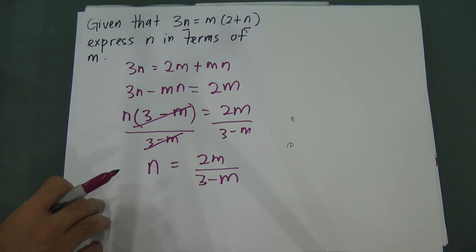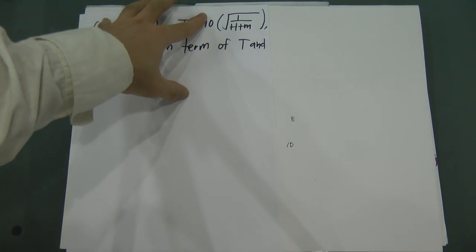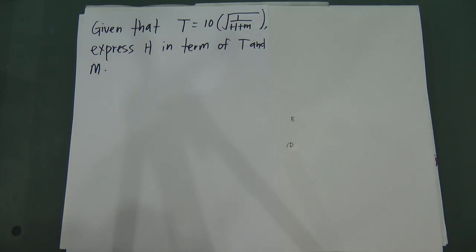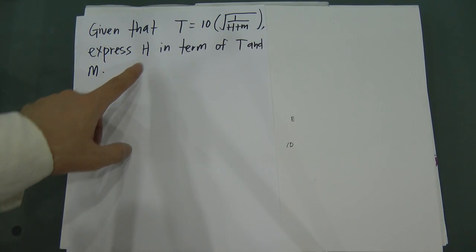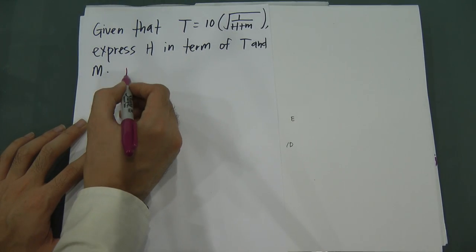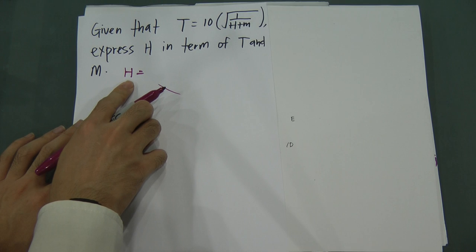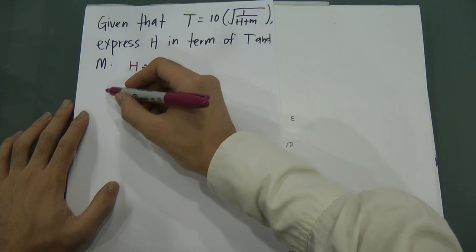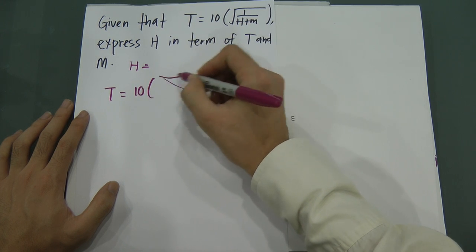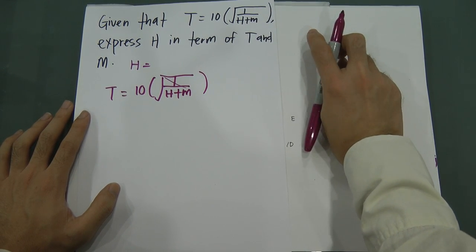Let's look at the last example. You have an equation and it says: express h in terms of t and m. Most students think this is very complicated. The equation is t equals 10 times the square root of (1 divided by h plus m). I want to make h the subject, so h equals something, and the other side can only have t and m.